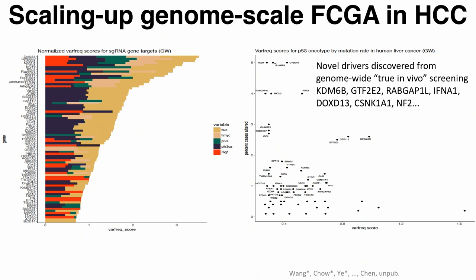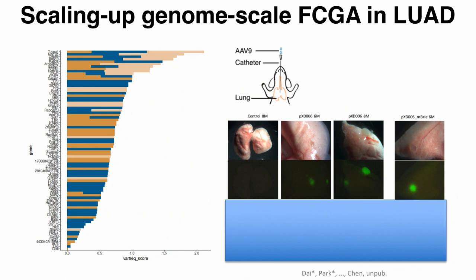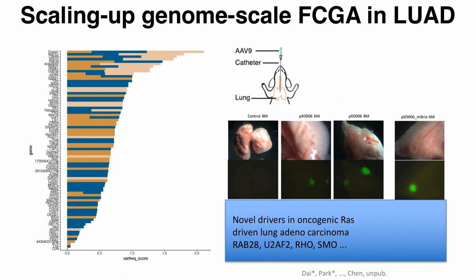We're still sorting this out, but the functional driver genes we map from liver cancer include KDM6, GTF2E2, NF2, CSNK1A, and many others. We also did this for lung adenocarcinoma using a KRAS-driven sensitized background. After injecting the whole genome knockout library into the lung and sequencing, we can map novel drivers in the lung — for example, RBM28, U2AF (a spliceosome factor), Rho, Smoothened, and many others.